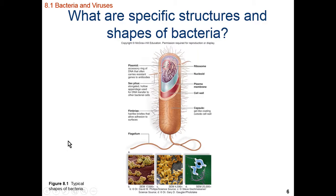Bacterial cells come in a variety of shapes. They can be spherical or cocci. They can be rod or bacilli-shaped. And then finally, they can be spiral or spirillum in shape.